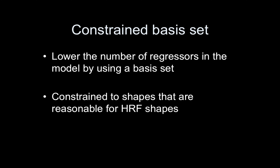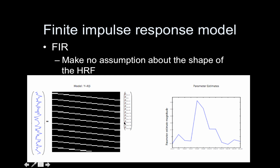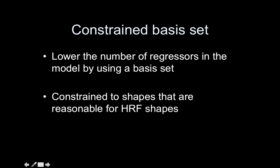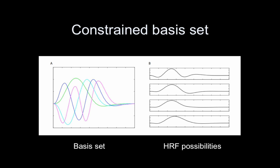There's a middle ground: the constrained basis set. If one end of the spectrum is high bias/low variance and the other is low bias/high variance, the constrained basis set is in between. You lower the number of regressors in the model — from around 12 or 13 down — which helps with variance. But you allow flexibility in the shape by using regressors that look like HRFs. Here are some examples: on the left are four basis functions, and on the right I've taken various linear combinations — multiplying them by numbers and summing them. The results look like HRFs, but with variety that allows small shifts in the HRF shape, different post-stimulus undershoot shapes, and so on.